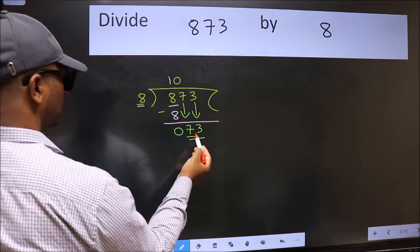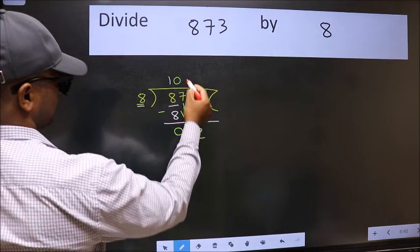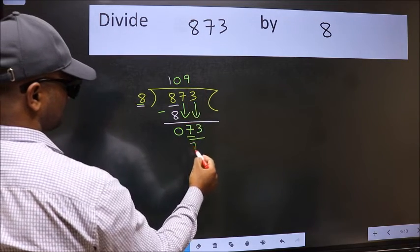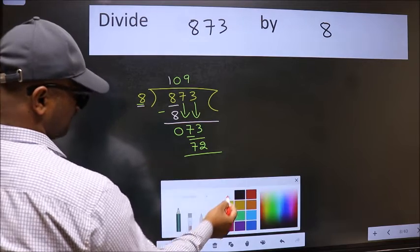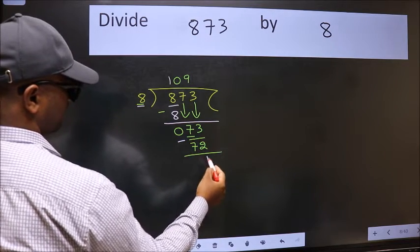Now 73. A number close to 73 in 8 table is 8 nines 72. Now we should subtract. We get 1.